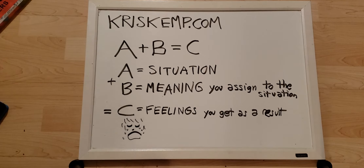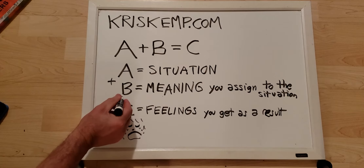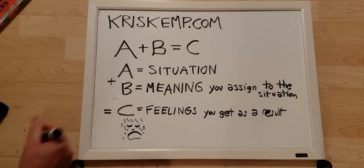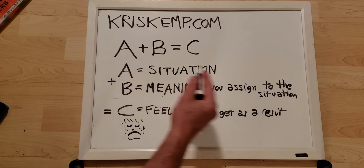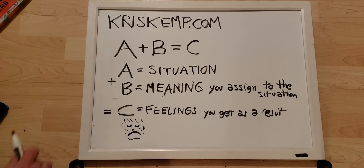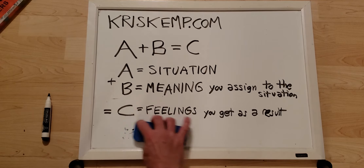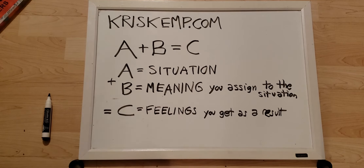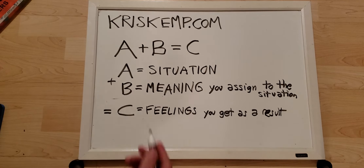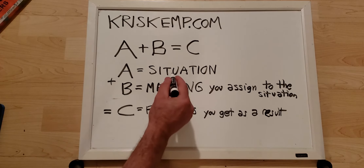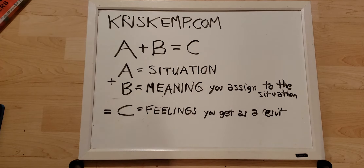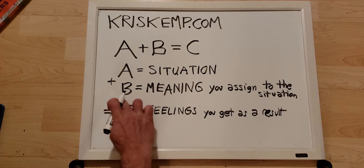Now what can you change with the ABC method? What you can change is B — the meaning you assign to the situation. Think about all the situations you're going through. Literally the only thing you really have control of is B, the meaning you assign to the situation. Let's find a different meaning for it. You're with your partner, you really like this person, they're pulling away, and you feel like they don't love you anymore. Let's assign a different meaning to it.